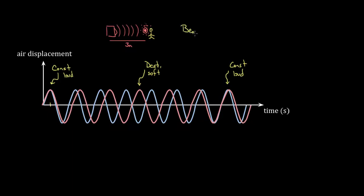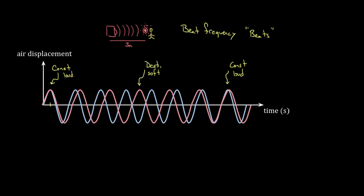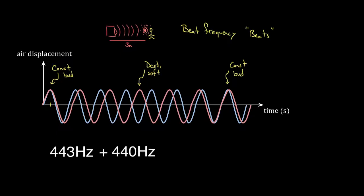So what you would hear, standing three meters away, is: at one moment the note is loud, then it becomes soft, then loud again — that note wobbles. The name we have for this phenomenon is beat frequency, or sometimes just called beats. I'm talking about that wobble from louder to softer to louder. Let me play it. If we play the A note at 440 hertz, then play just a slightly different frequency — 443 hertz — you probably can't tell the difference between them individually. But if I play them both together, you'll definitely hear the wobble. That's what physicists mean by beat frequency or beats.